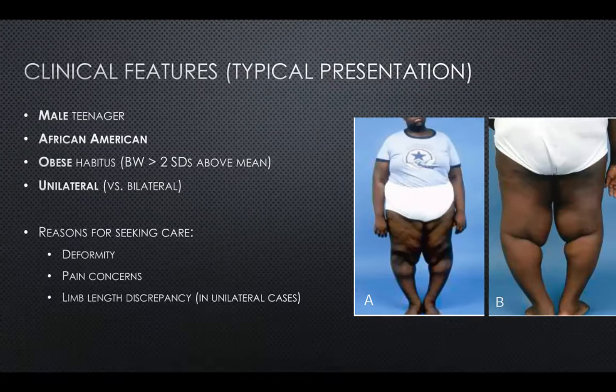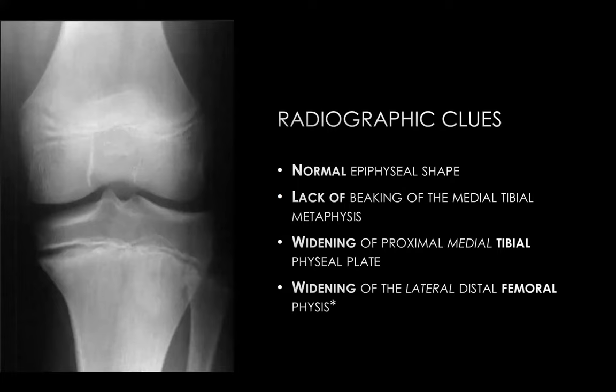Radiographic features distinguishing adolescent from infantile Blount disease include normal epiphyseal shape — the epiphysis has ossified by the time the deformity develops so it is not severely affected. There is also a lack of beaking of the medial proximal tibial metaphysis, which is far more prominent in the infantile subtype. Widening of the proximal medial tibial physeal plate is visible radiographically.